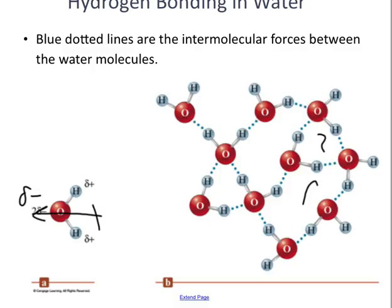Water is the only substance whose solid will actually float in its liquid. Any other solid in the world — its solid is more dense than its liquid. Water, due to the hydrogen bonding and the way it has to align to get as close to each other as it can — you get all that space — that's why we get that characteristic. Water is definitely special.